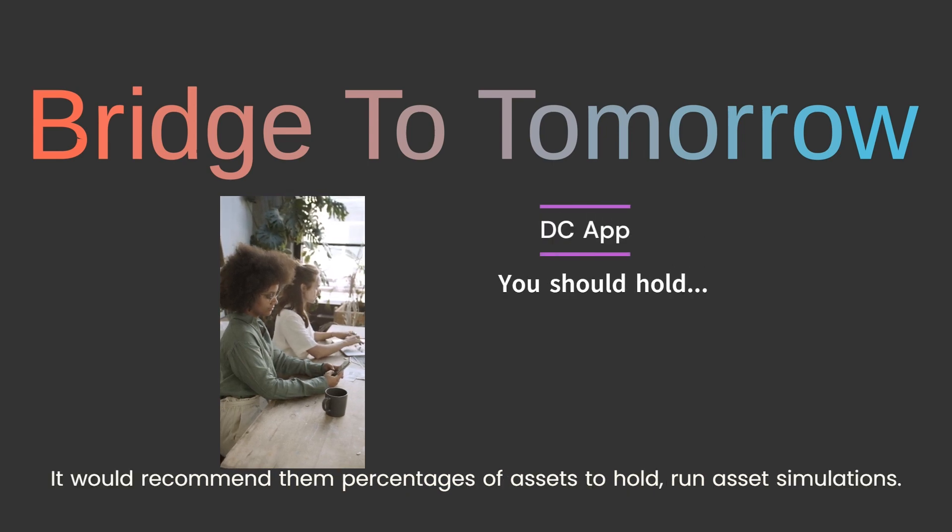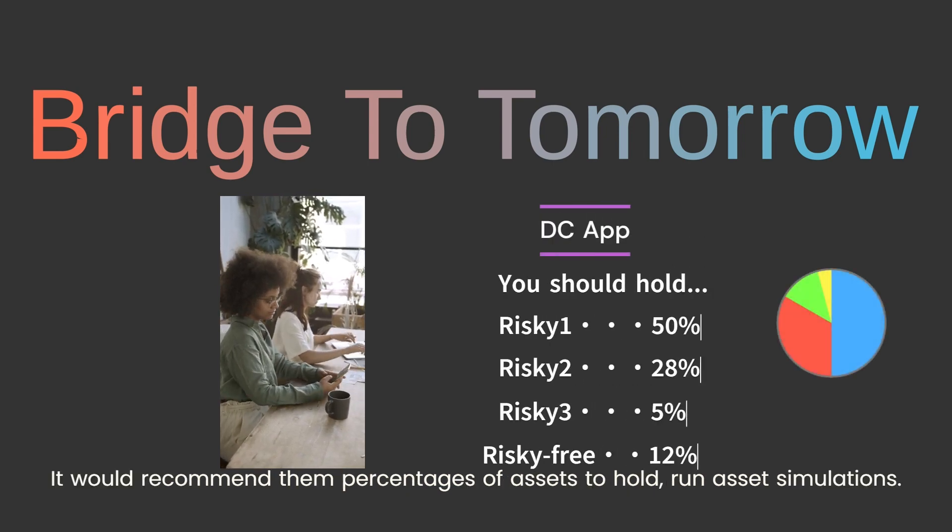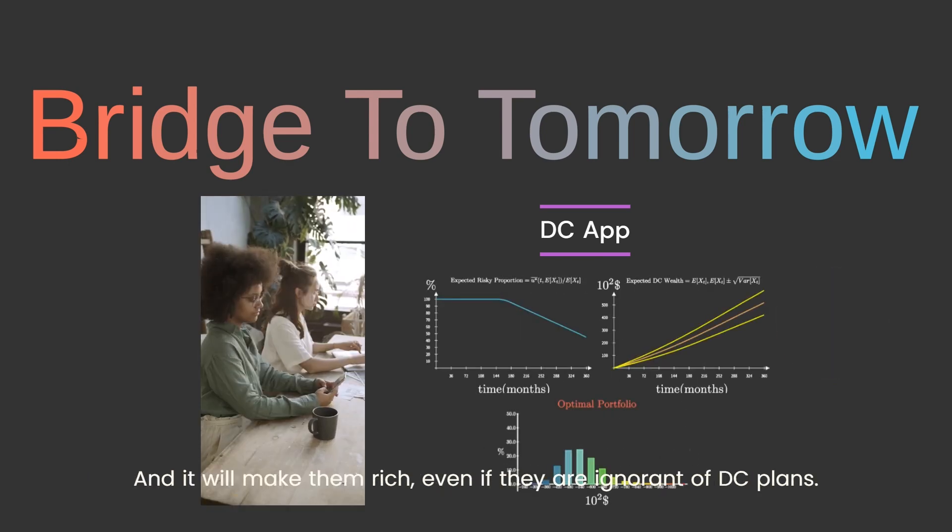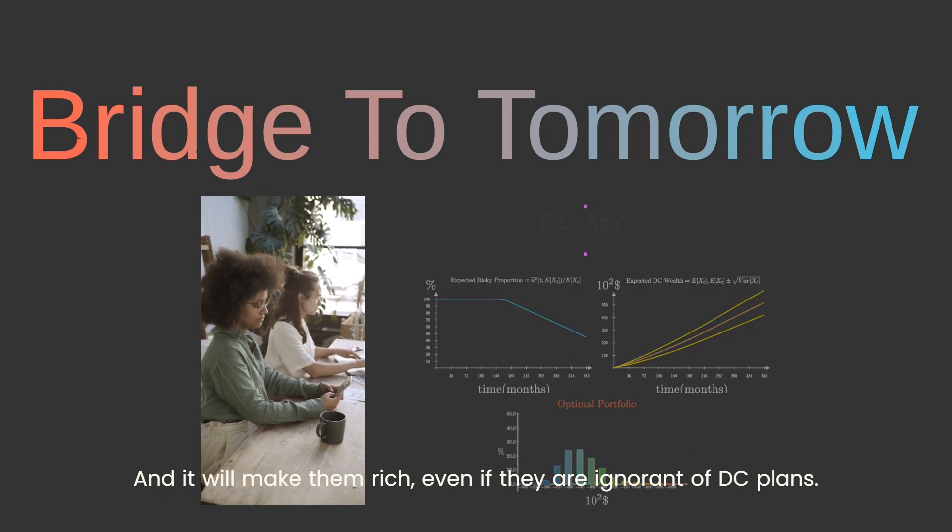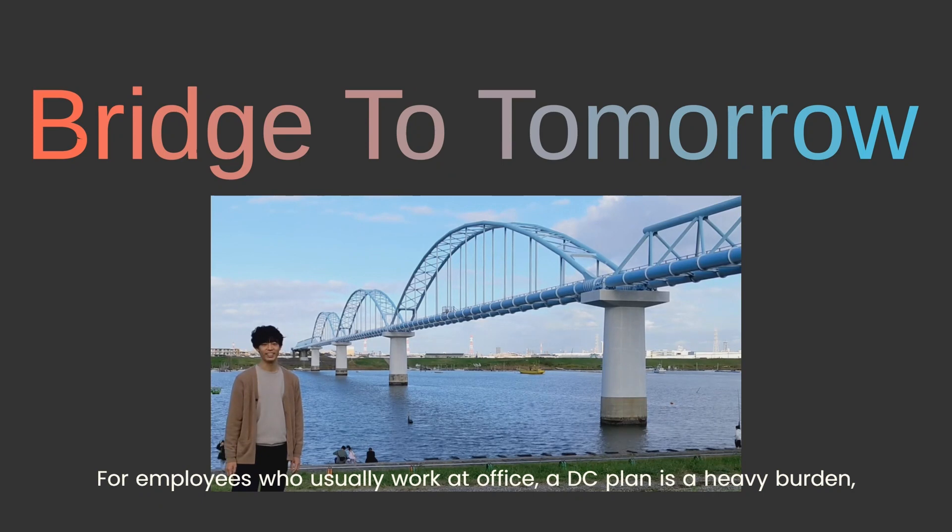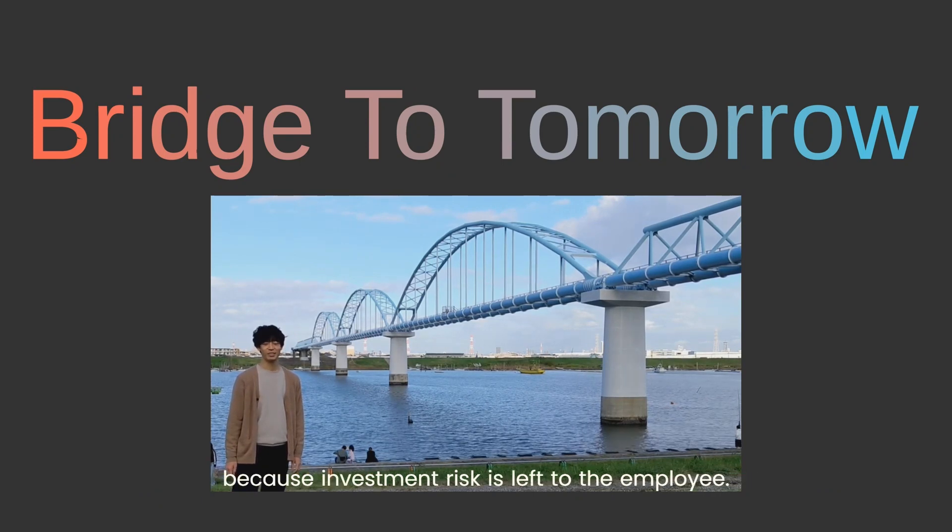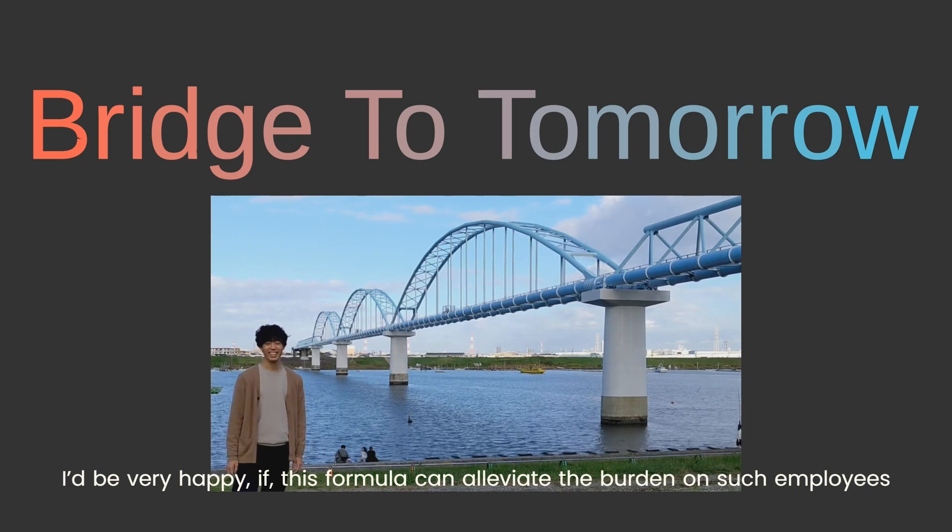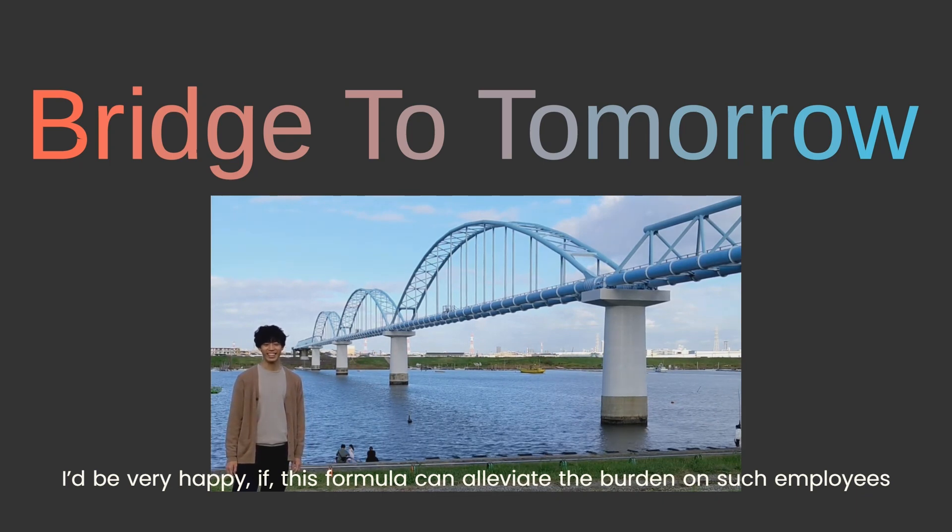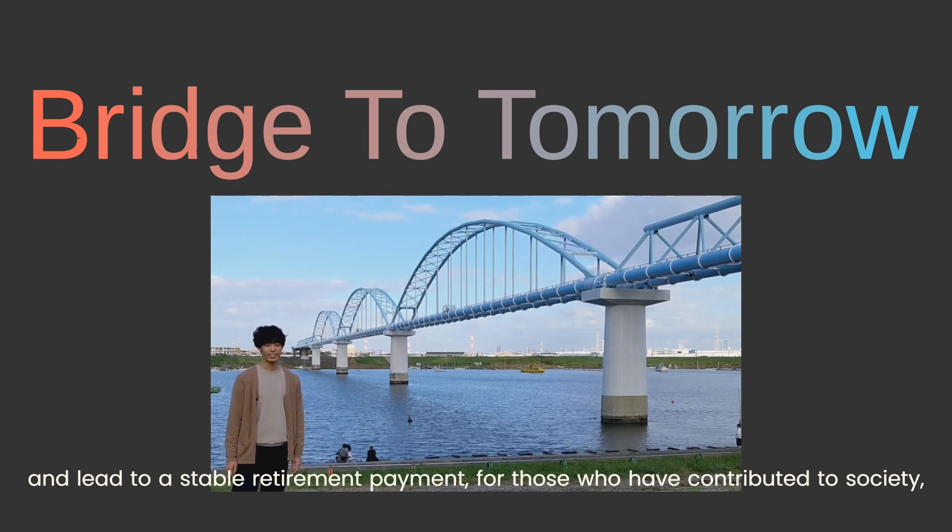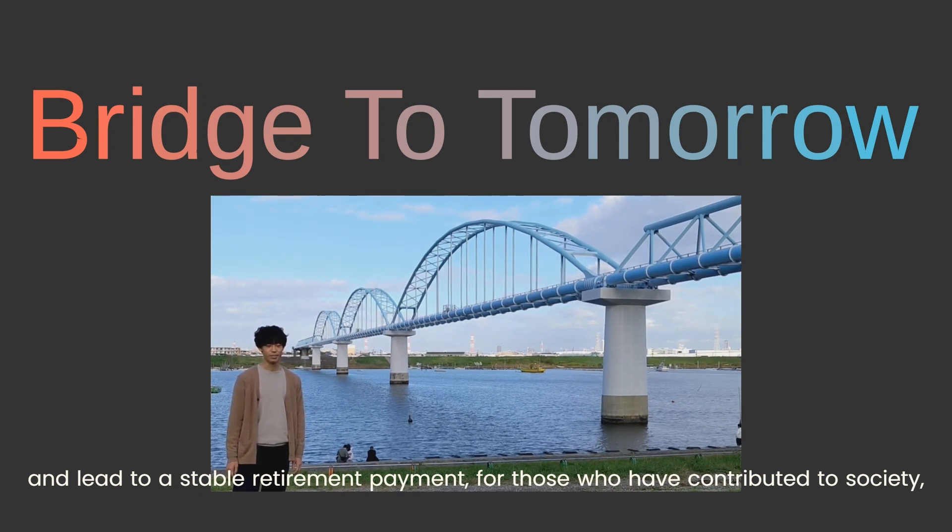It would recommend them percentages of assets to hold, run asset simulations, and it will make them rich even if they are ignorant of DC plans. For employees who usually work at office, a DC plan is a heavy burden, because investment risk is left to the employee. I'd be very happy if this formula can obviate the burden on such employees and lead to a stable retirement payment for those who have contributed to society.